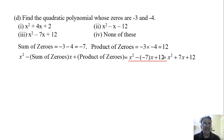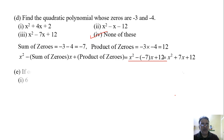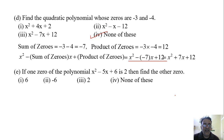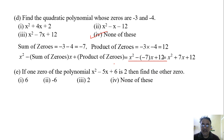The correct option here would be the fourth one — none of these — because this option may not be listed. Now the last sub-question: if one zero of the polynomial is 2, find the other zero.